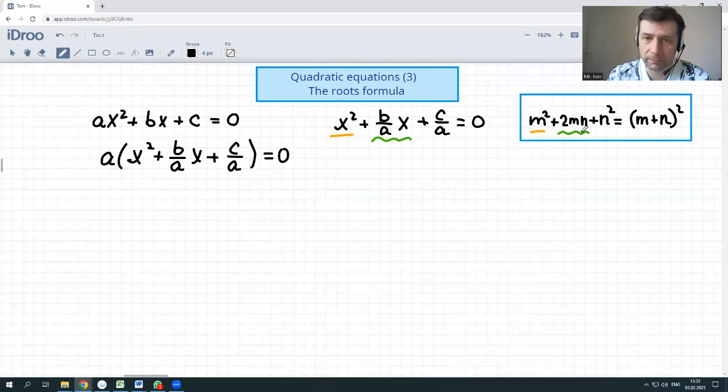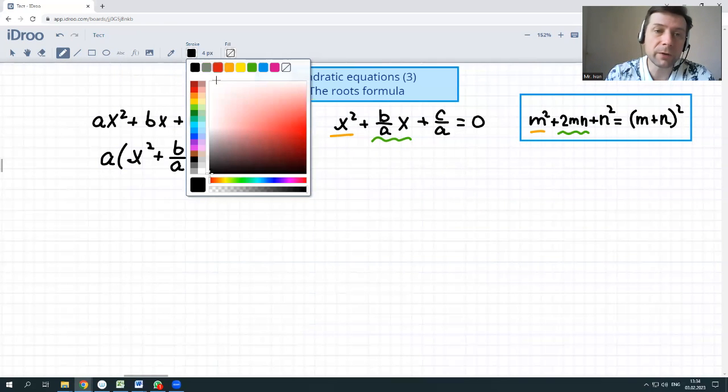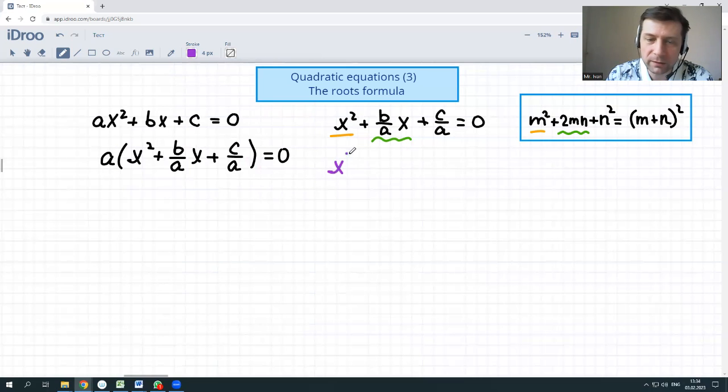So b over a times x is equal to 2mn. In order to get this 2mn shape, let us factor out two. So x squared plus two times something to get b over a times x. Two times what? Of course, if m is x, then it should be x. We have b over a. If we just write b over a, it will be twice as much, but if we write b over 2a, it will be precisely the same. If you cancel the two, you'll get x times b over a or b over a times x.